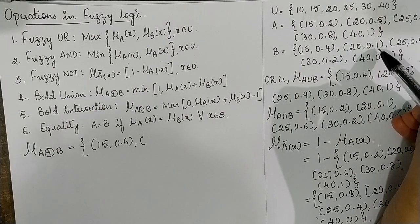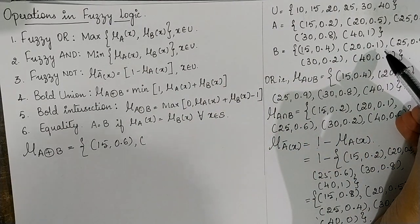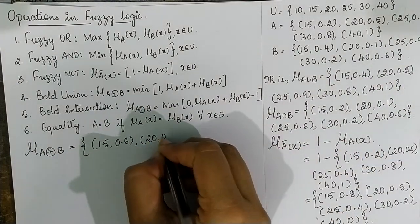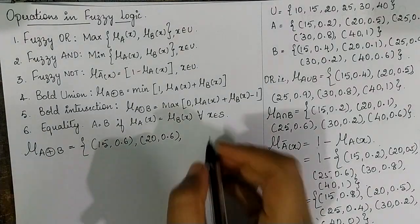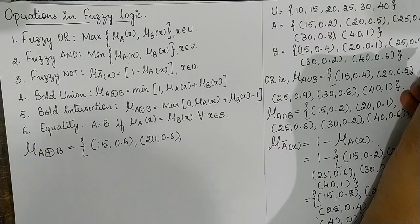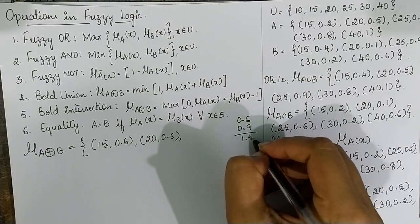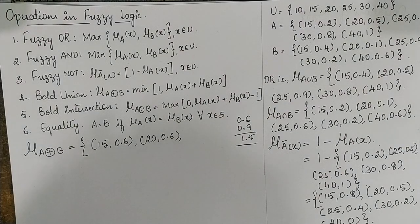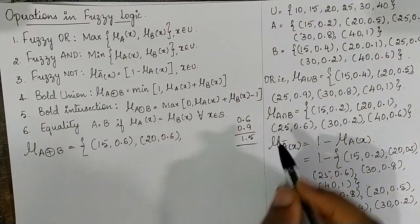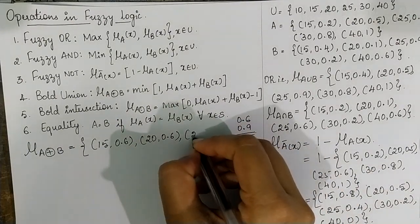For 25: 0.6+0.9=1.5. Since fuzzy set values must be in the range 0 to 1 and must not exceed 1, we compare 1.5 and 1 — minimum is 1, so 25→1. For 30: 0.8+0.2=1.0; compare 1 and 1.0 — both are equal, so 30→1.